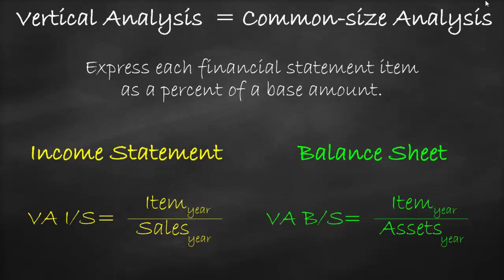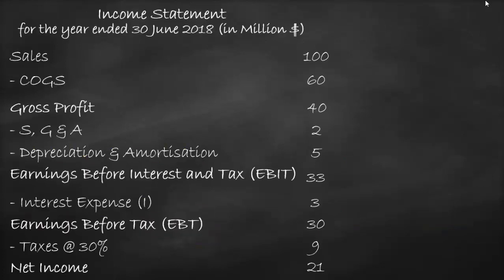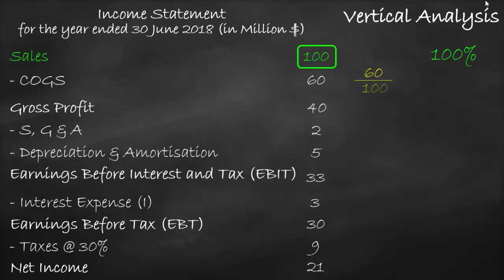Let's apply the vertical analysis to the income statement for the year 2018. We divide all items by sales of the same year. This means that the sales will always be 100%. To get a vertical analysis of the cost of goods sold, we divide the cost of goods sold of $60 million by sales of $100 million, which is equal to 60%.